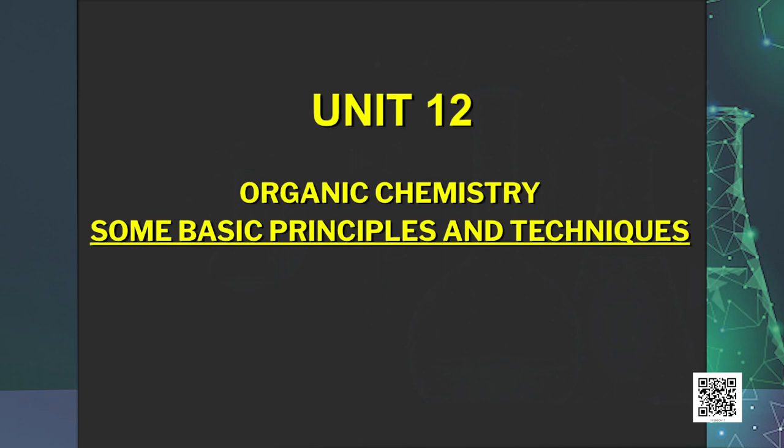Hello learners. In this session we are going to study unit 12 from the second volume of the NCRT textbook. The title of the unit is Organic Chemistry: Some Basic Principles and Techniques. In this session we will talk about isomerism, fission of a covalent bond, and electron displacement effects in covalent bonds.